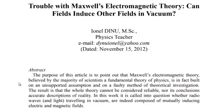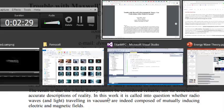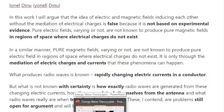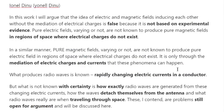Reading the abstract: the purpose of this article is to point out that Maxwell's electromagnetic theory, believed by a majority of scientists as a fundamental theory of physics, is in fact built on an unsupported assumption and on a faulty method of theoretical investigation. The result is that the whole theory cannot be considered reliable, nor its conclusions accurate descriptions of reality. The work calls into question whether radio waves and light traveling in a vacuum are indeed composed of mutually inducing electric and magnetic fields.